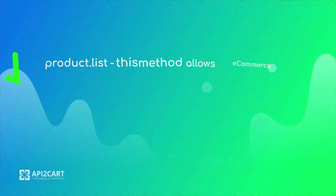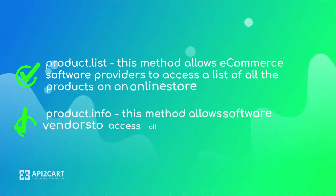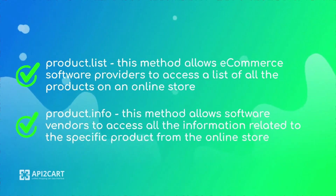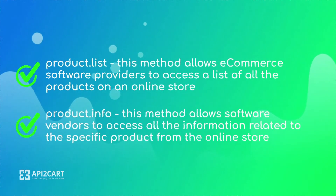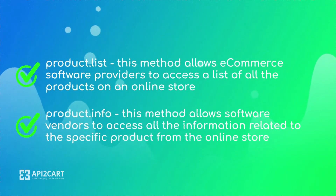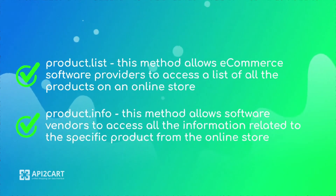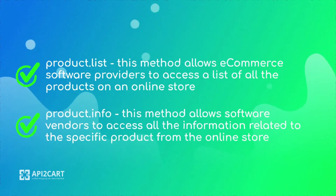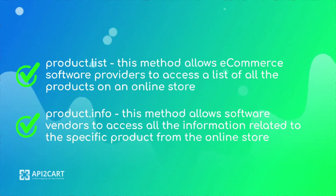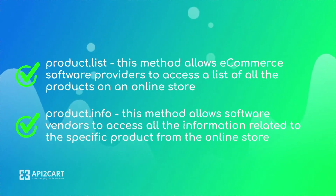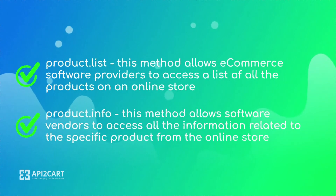Product list: this method allows e-commerce software providers to access a list of all the products on an online store. Product info: this method allows software vendors to access all the information related to a specific product from the online store.